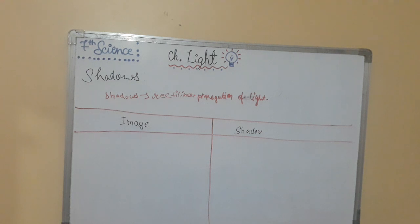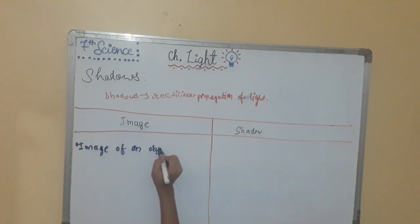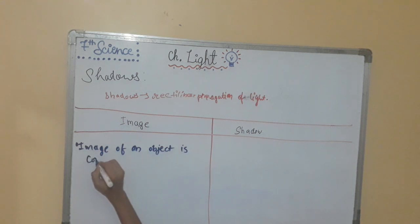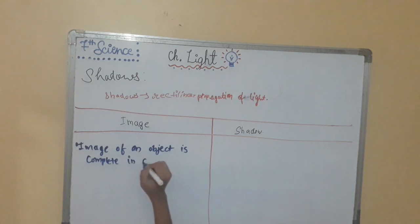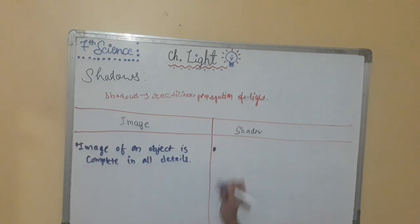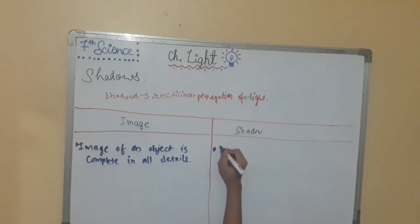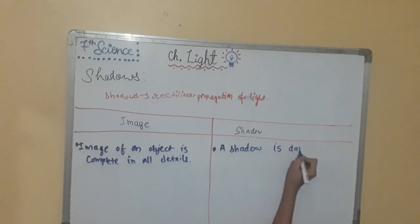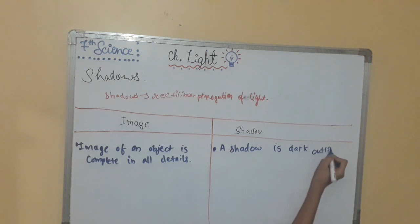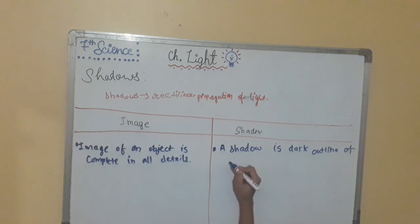First point: an image of an object is complete in all details. In contrast, a shadow is a dark outline of an object — we cannot clearly see the color or structure. We can only see the outline of the object.